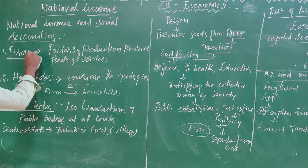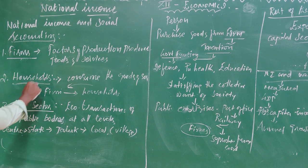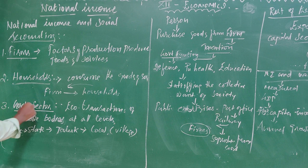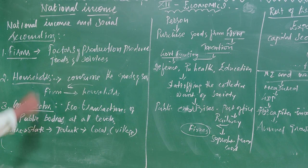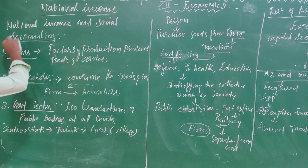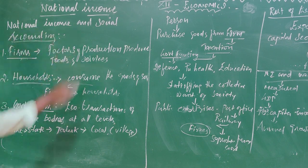There are three sectors: a firm sector, household sector, and government sector. These three sectors are covered in social accounting.